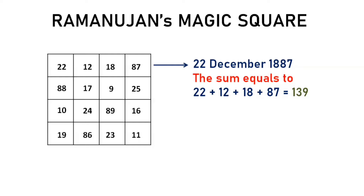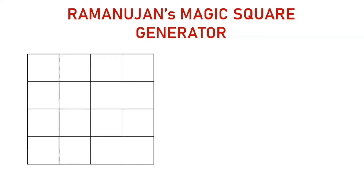Here we are also going to create such a magic square with your own date of birth using some simple calculations. Let A be the date, B be the month, C be the first two digits of the year, and D be the last two digits of the year. Now fill the next rows using these simple calculations.